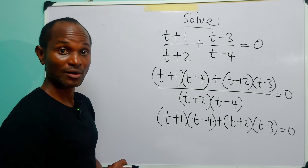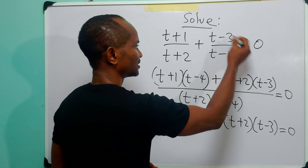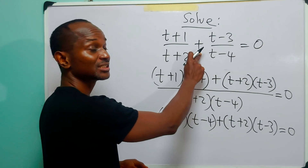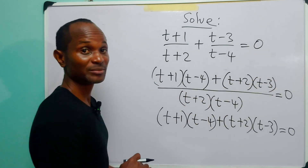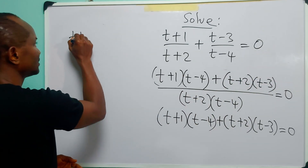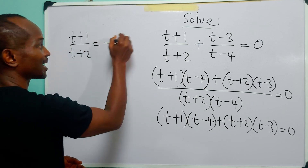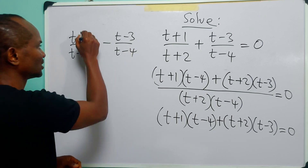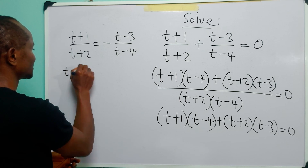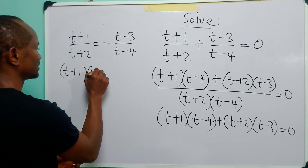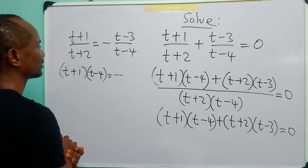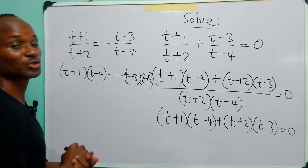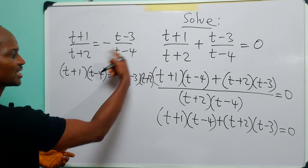There is a second way of doing this. You can take this quantity over to the right-hand side of the equation. Since we have zero here, a positive quantity crossing the equality sign becomes negative. So we have (t+1)/(t+2) = -(t-3)/(t-4). We can now cross multiply: (t+1)(t-4) = -(t-3)(t+2).